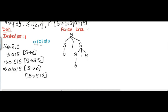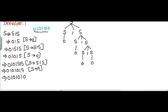Instead of this S, I substitute S1S. The next character I need is 0, so instead of S I substitute 0. Then the next character needed is also 0, so I substitute 0 instead of S. I got the input 0 1 0 1 0 1 0.